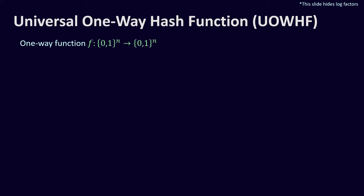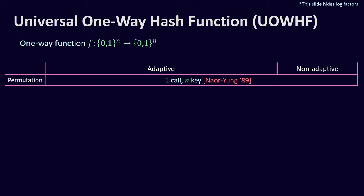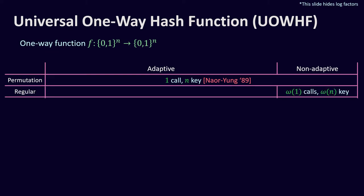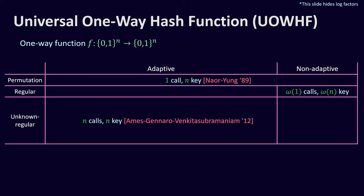If we want to construct a universal one-way hash function from a one-way function and we know the function is a permutation, we can do it using one call and a key of linear size. As in the PRG case, this can be generalized for regular one-way functions. If the function is unknown regular, the best construction uses n adaptive calls and a key of linear size, achieved with the same randomized iterate method used for PRGs.